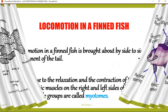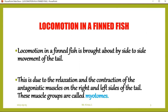Now regarding locomotion in a finned fish — locomotion is brought about by the side-to-side movement of the tail. When the tail is moved sideways, that is what brings about locomotion. This is due to the relaxation and contraction of antagonistic muscles on the right and left sides of the tail. These groups of muscles are called myotons. By antagonistically, we mean when the muscles on the right side relax, those on the left side contract.